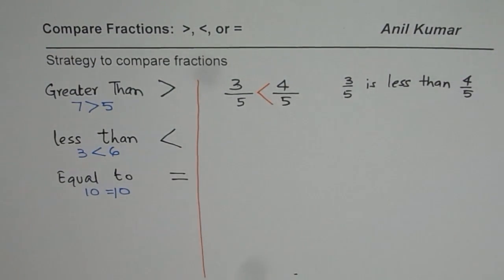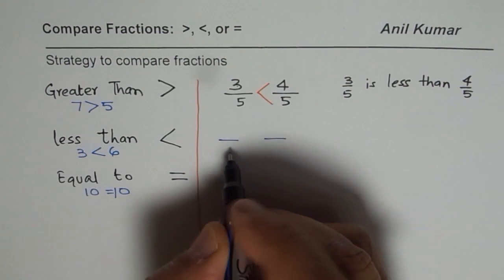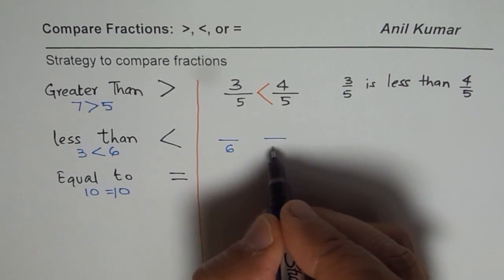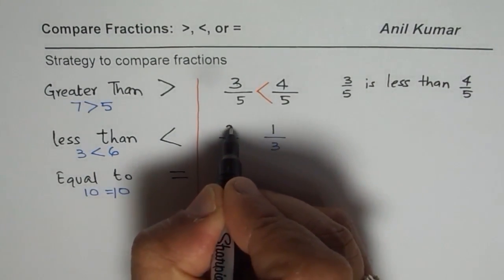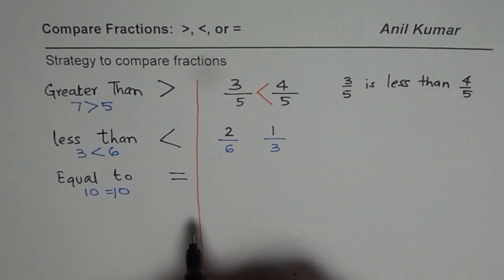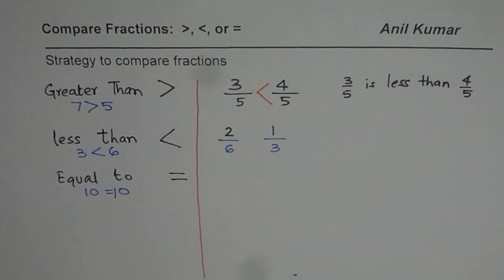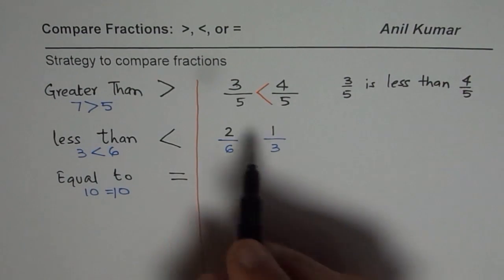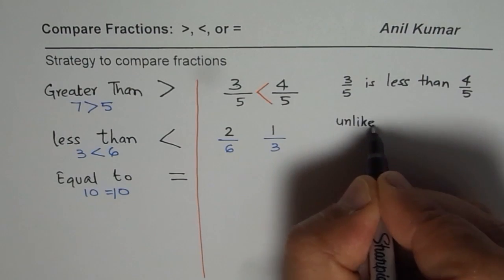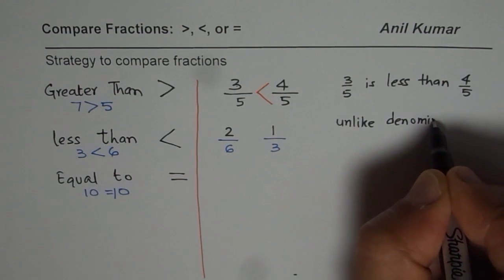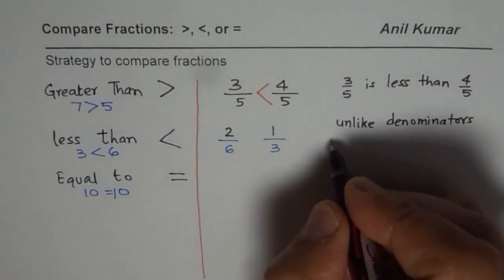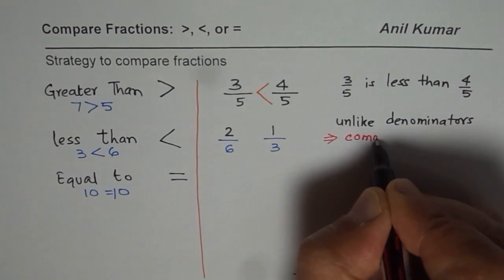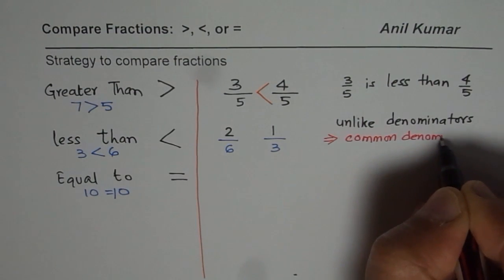This was simple since we had the same denominator, so it was very easy. Now let me take another example. This time fractions with different denominators — say 6 and 3. If I have 1 as a numerator and 2 as a numerator here, can you tell me which one is greater, which one is lesser, or are they equal? How do we figure that out? When we have unlike denominators, we need to make them the same — that is, convert them to a common denominator. Then only can you compare.